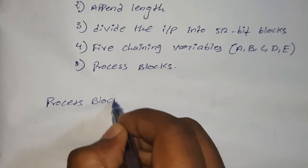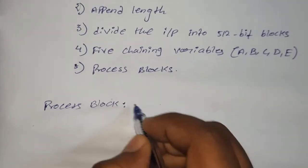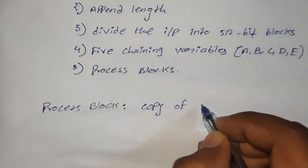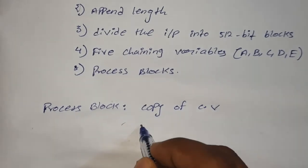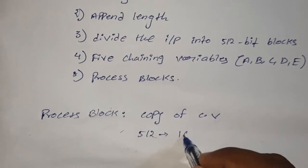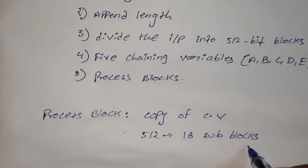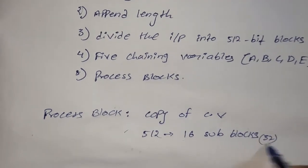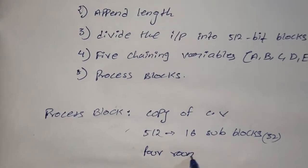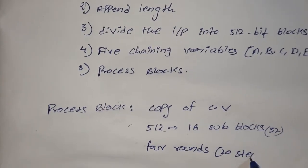In process block, there are some steps. The first is copy of chaining variables. And the second step is divide 512 bits into 16 sub-blocks. Each sub-block contains 32 bits. And the third step is you have to do four rounds, and each round, there are 20 steps.